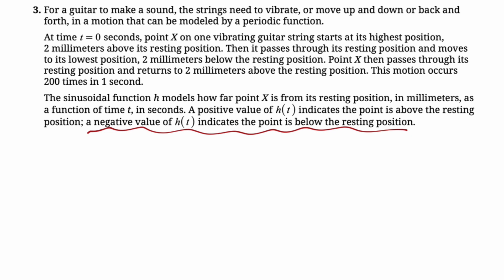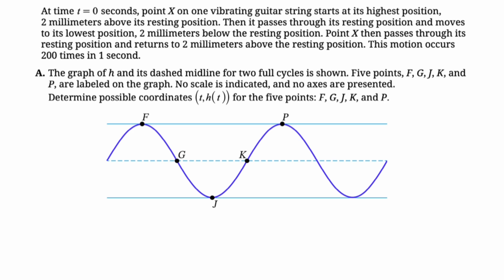The most relevant thing in here, you should read the whole thing when you're actually solving this, but a negative value of h of t indicates the point is below the resting position. So when we're at the minimum that we get to, it's going to be negative two. So let's see what we got to do. I mean, we already know what we have to do. It's the same thing every time.